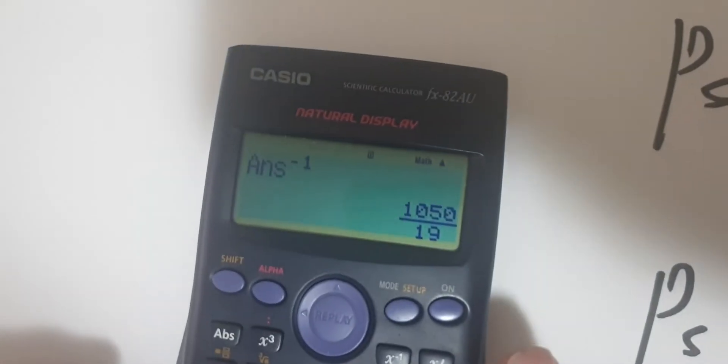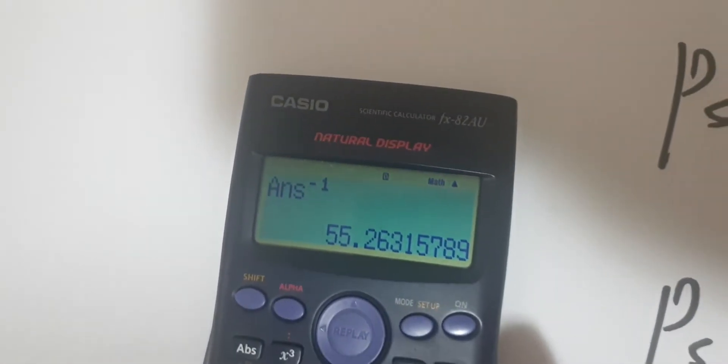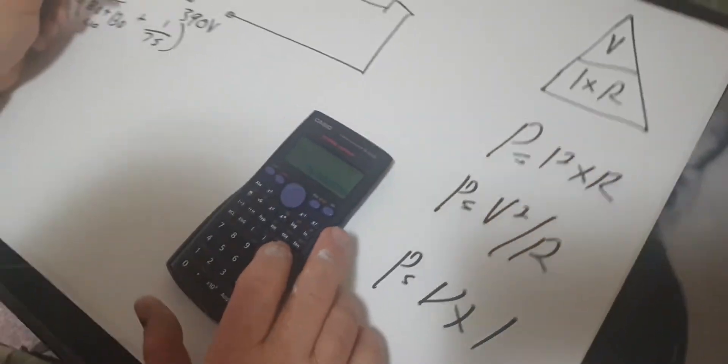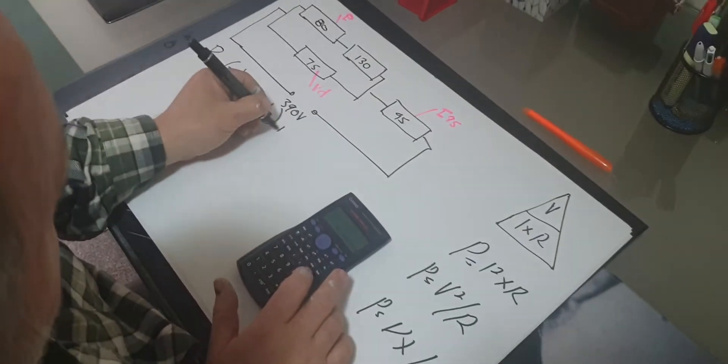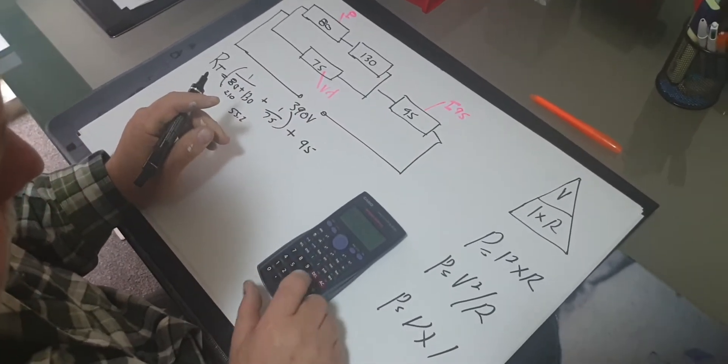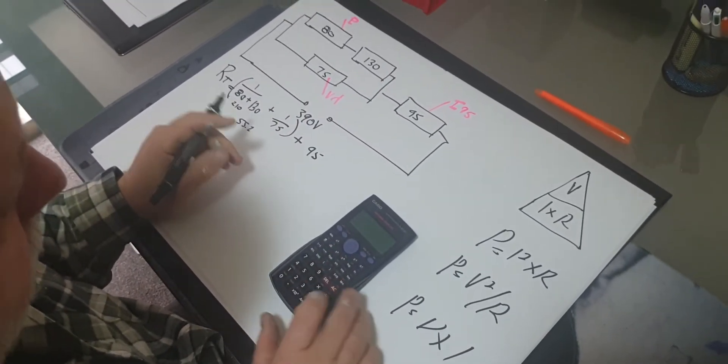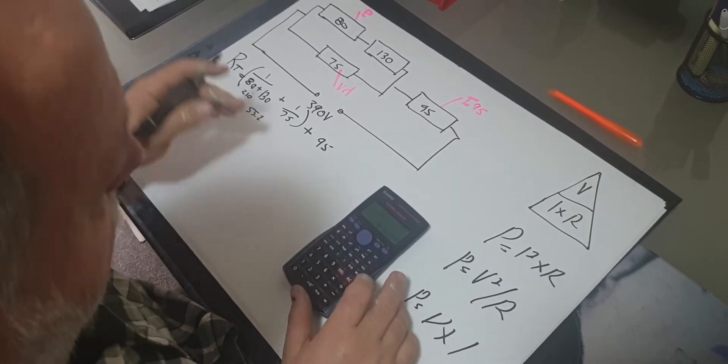So that's one over 210 plus 75 over one. We push equals, but I do it over again one and then what do we get? You get 55.2 ohms.